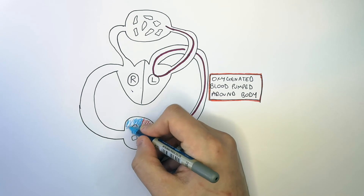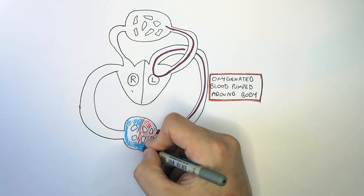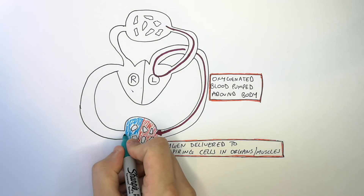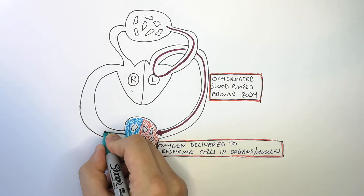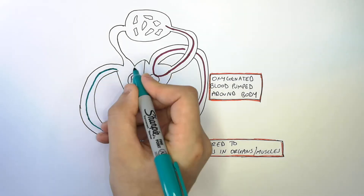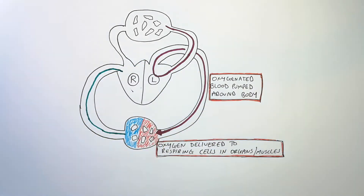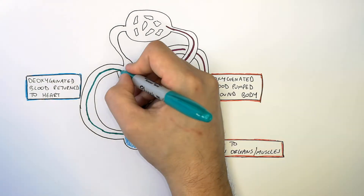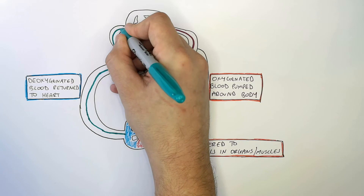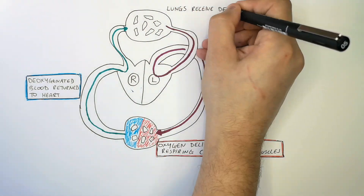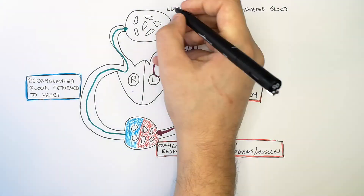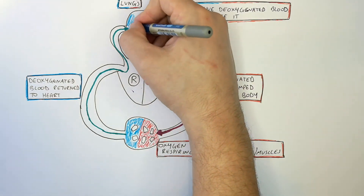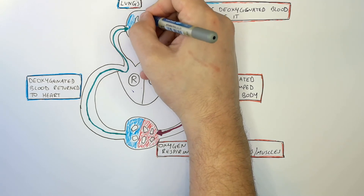This blue colour here represents the deoxygenated blood, although deoxygenated blood is not actually blue — this is just to represent the difference. Deoxygenated blood returns from the respiring cells back to the right side of the heart. Deoxygenated blood is returned to the heart, and the right side of the heart will then pump deoxygenated blood to the lungs.